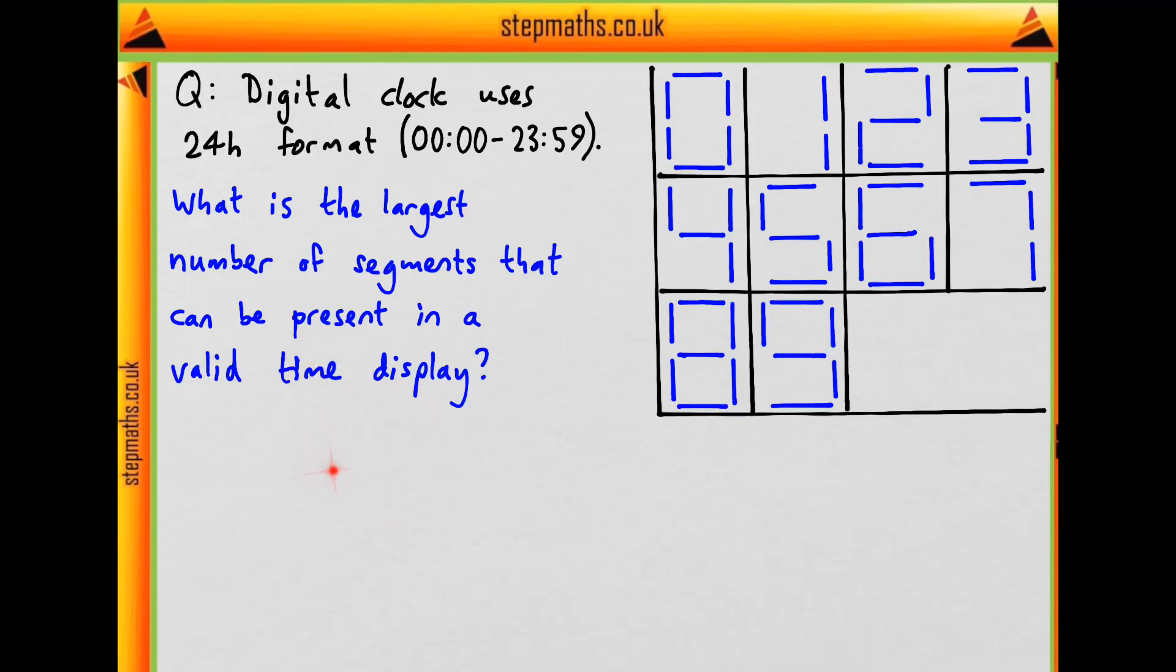First, let's count up the number of segments in each of these digits. In the 0 we have 6 segments. In 1 we have 2. In the 2 we have 5 segments. In the 3 we also have 5. In the 4 we have 4. In the 5 we have 5, and in the 6 we have 6. In the 7 we have 3. In the 8 we have the maximum of 7. And finally in the 9 we have 6.